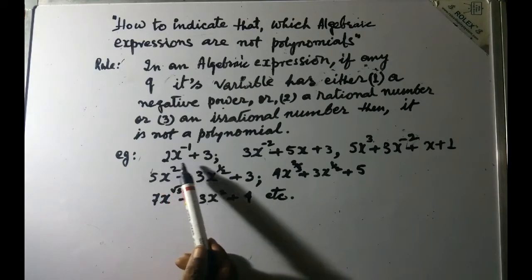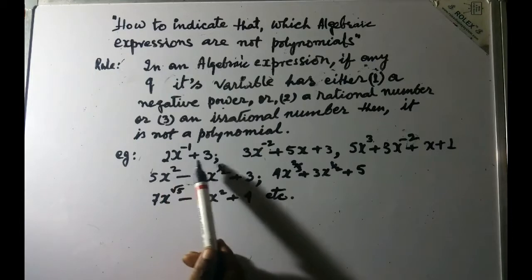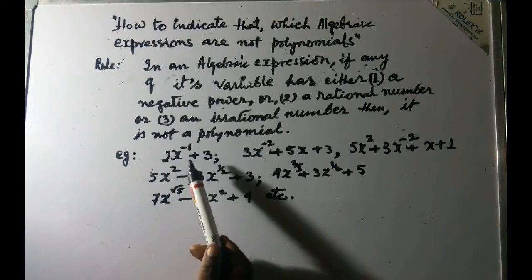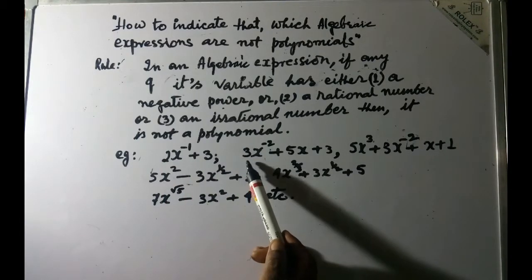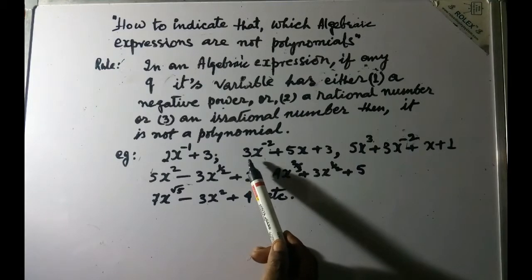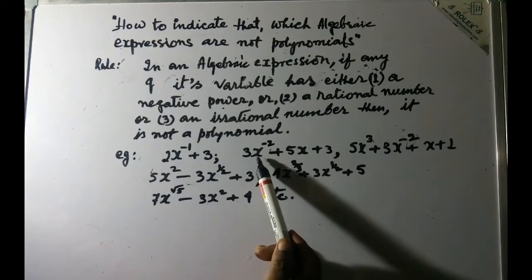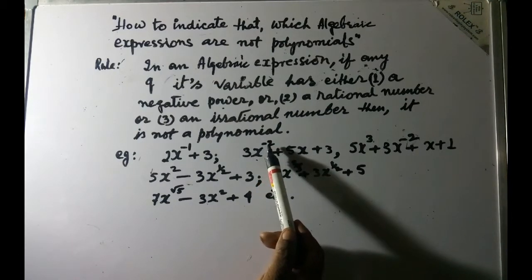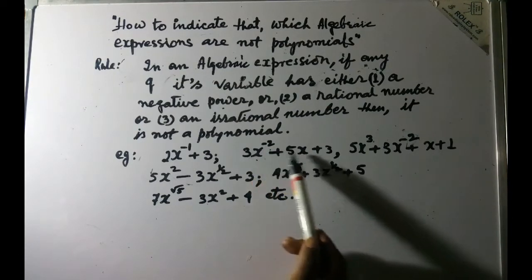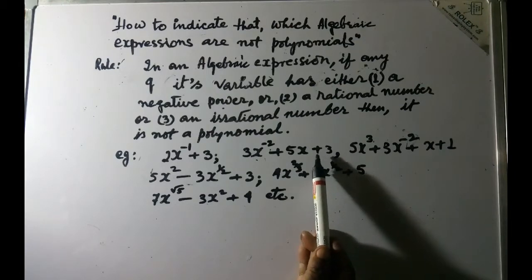We also say that it is a look-alike of polynomial. Then here also another look-alike, you see it seems like it is a quadratic polynomial but in fact it is not because look at this variable here, it has a negative power 2, so again this is also not a polynomial.